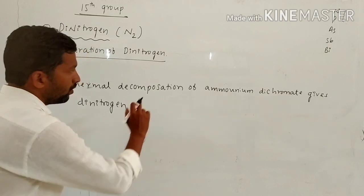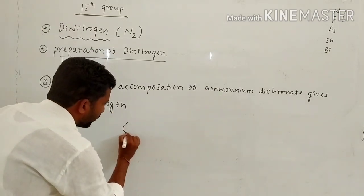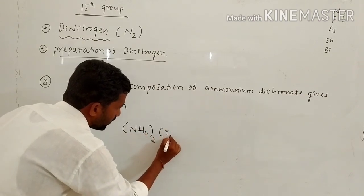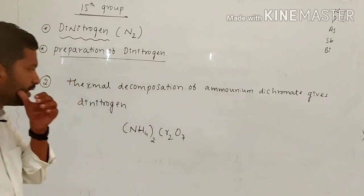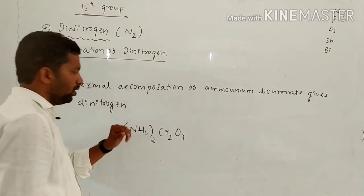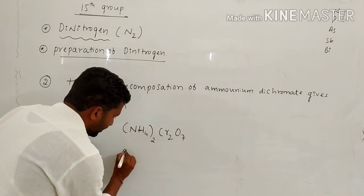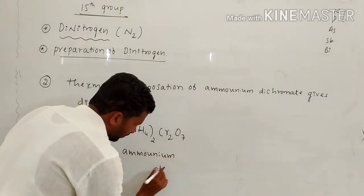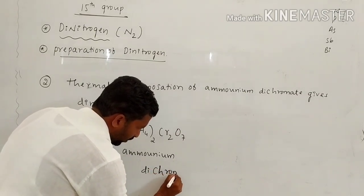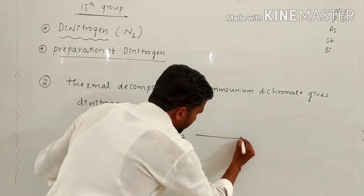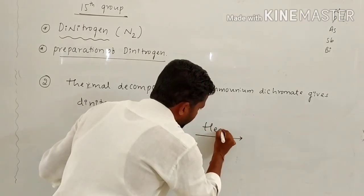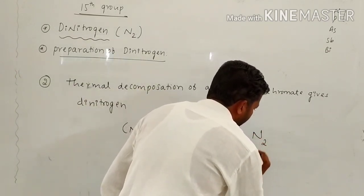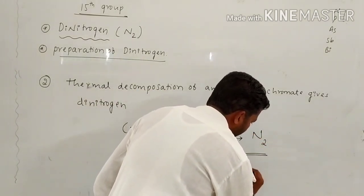By heating ammonium dichromate — (NH4)2Cr2O7 — similar to potassium dichromate K2Cr2O7 — ammonium dichromate on heating gives the products.